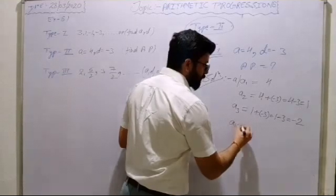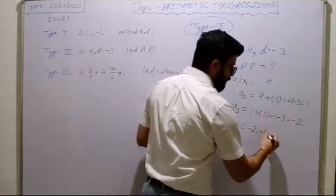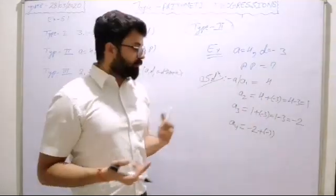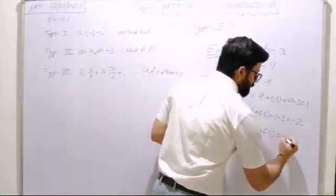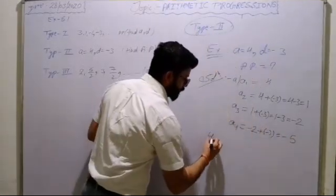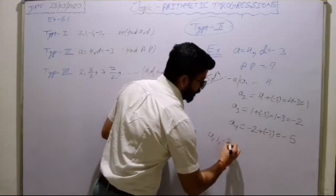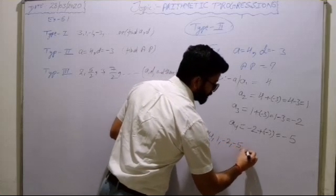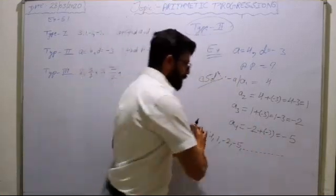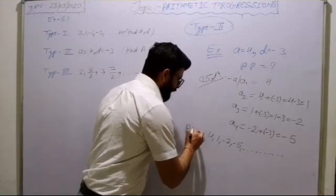So finally, the required arithmetic progression is: 4, 1, -2, -5, and so on. We don't need to calculate more terms — we only have to show the AP.